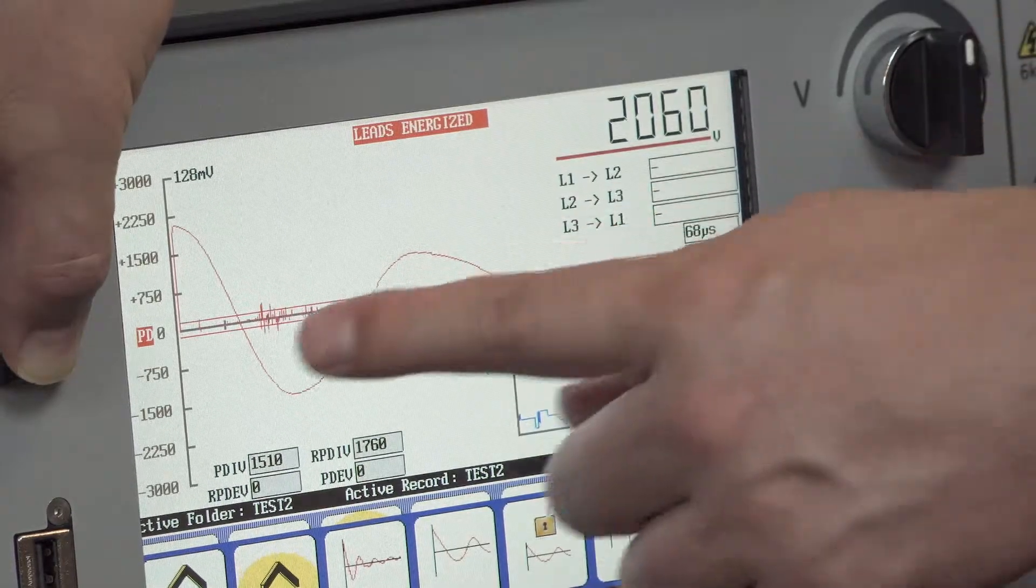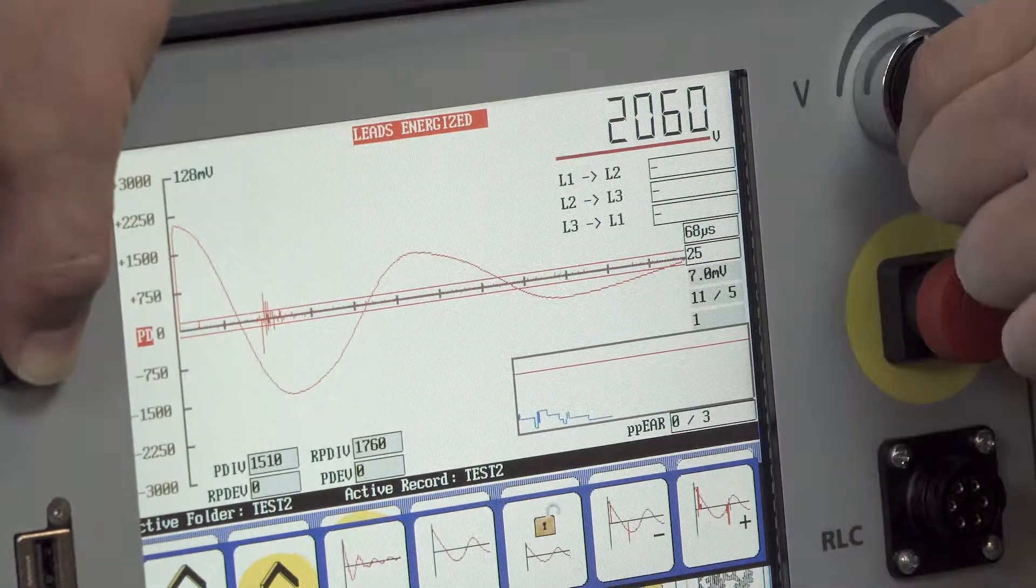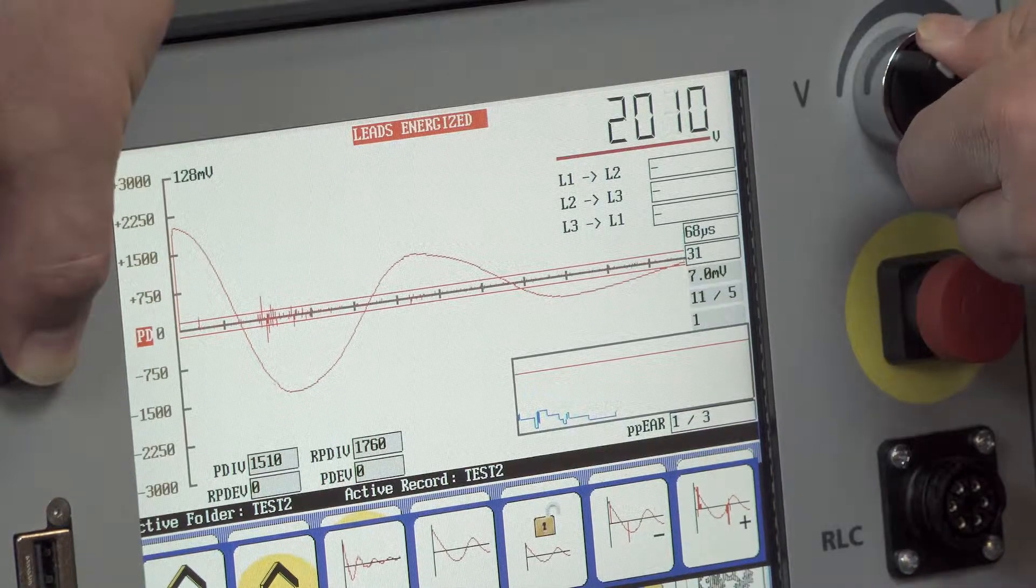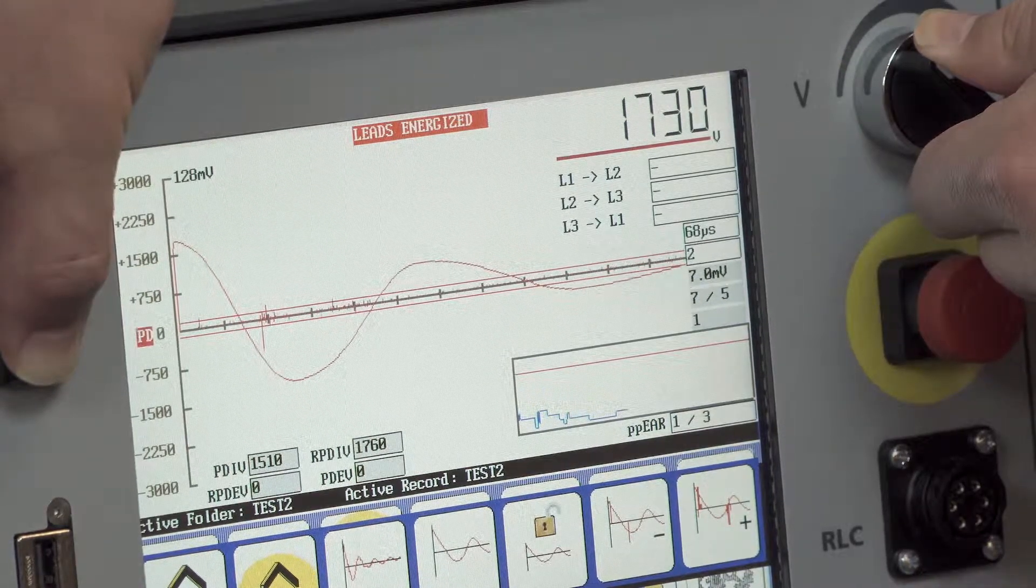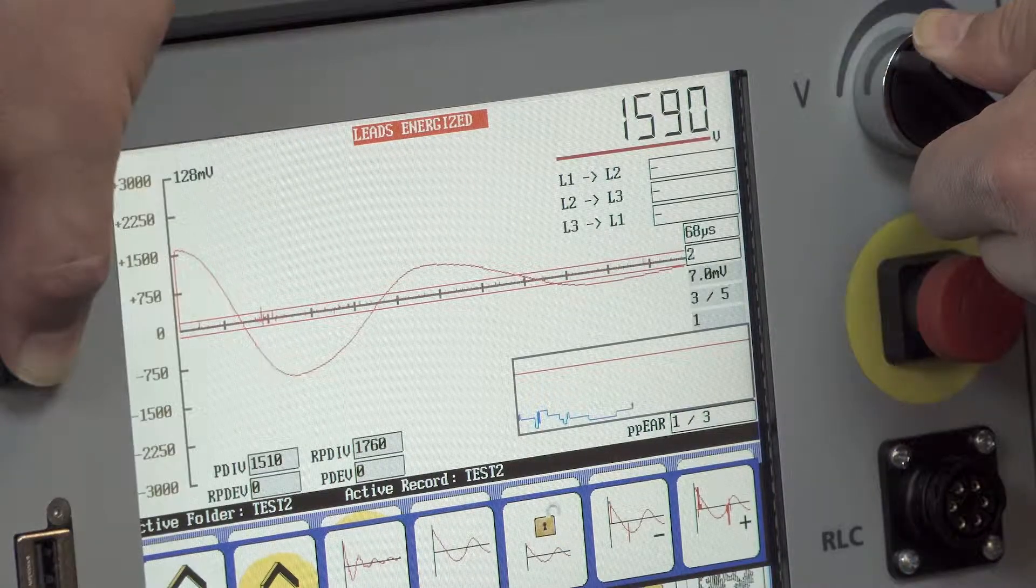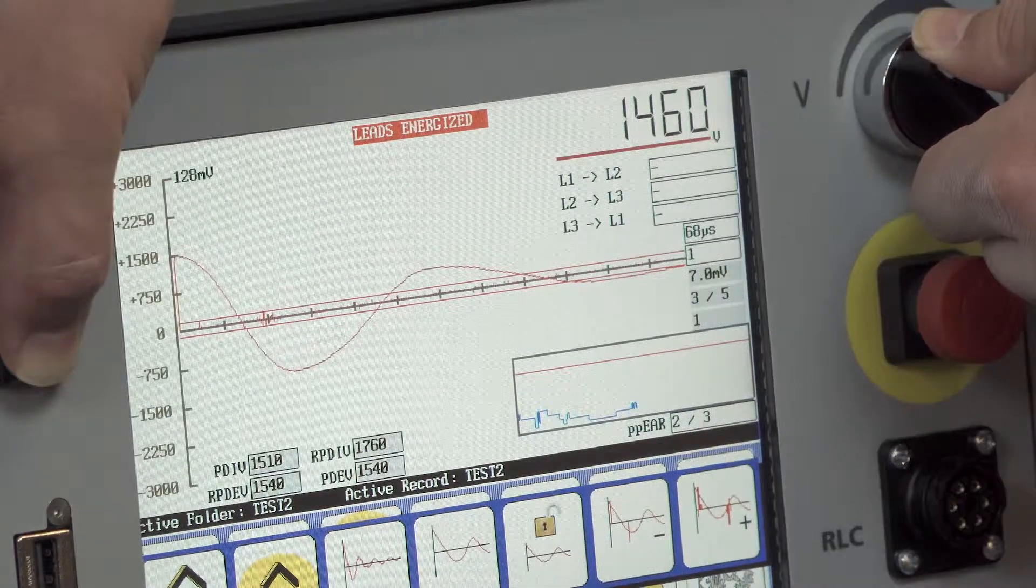Now we want to lower the voltage until the PD activity goes away. And the tester will record the partial discharge extinction voltage as well as the repetitive partial discharge extinction voltage.